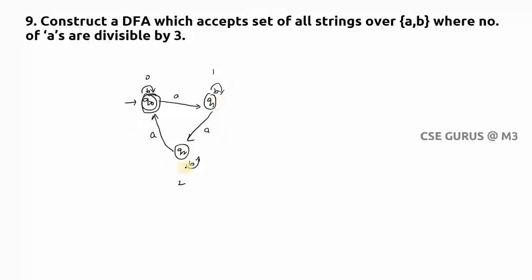And number of b's will be self loop for each state. So like this you need to follow the rules when you want to construct the DFA for different types of problems. Thank you.